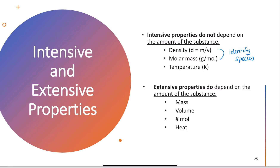Molar mass is another example of an intensive property. Molar mass is the grams of a substance divided by the moles of that substance. A mole is a number word representing how many of something you have. Temperature is also an intensive property — it doesn't matter how much of something you have; it's still that temperature.